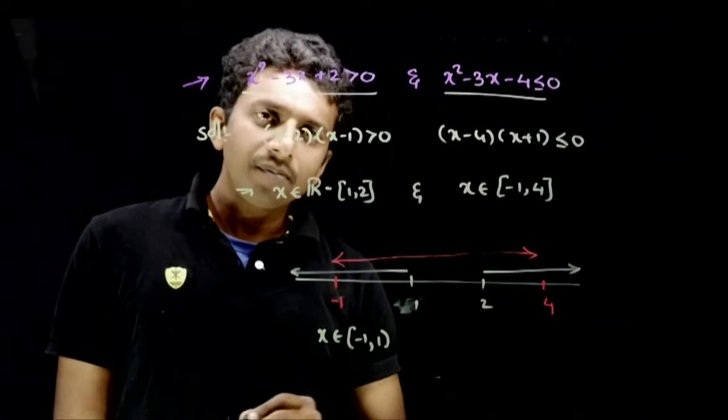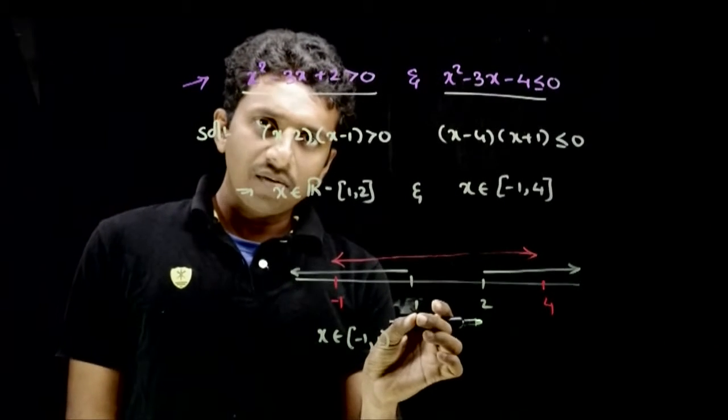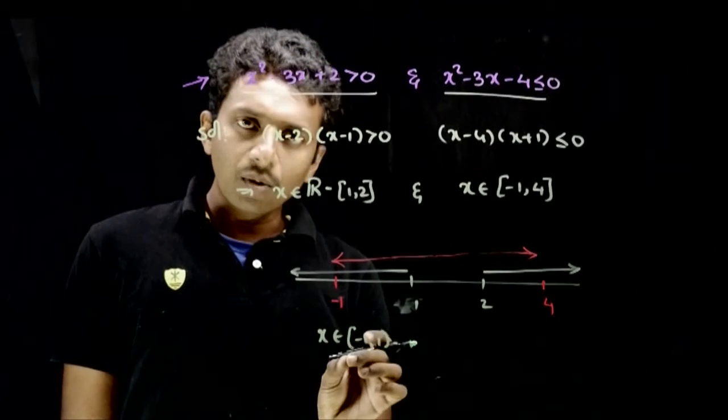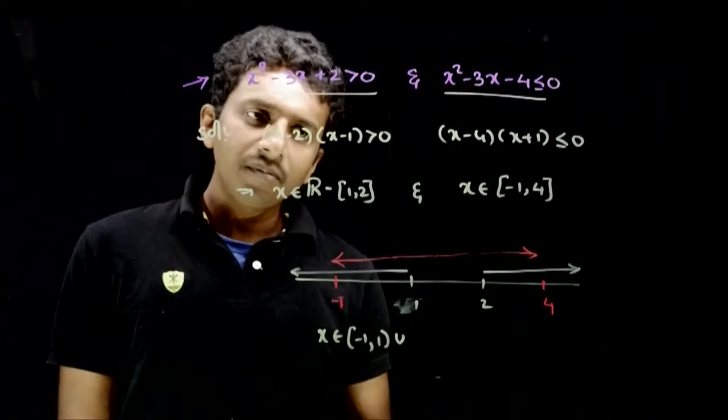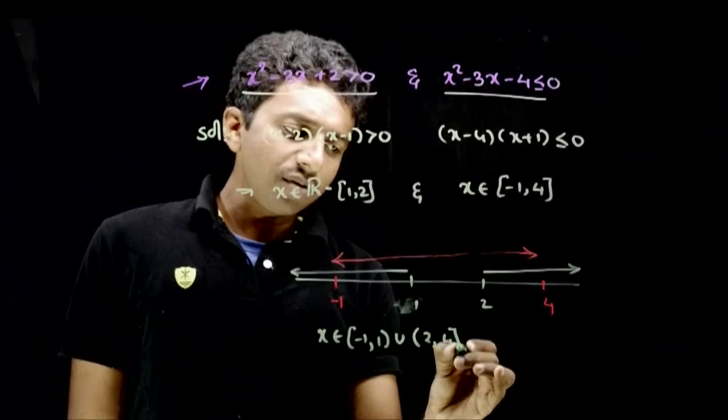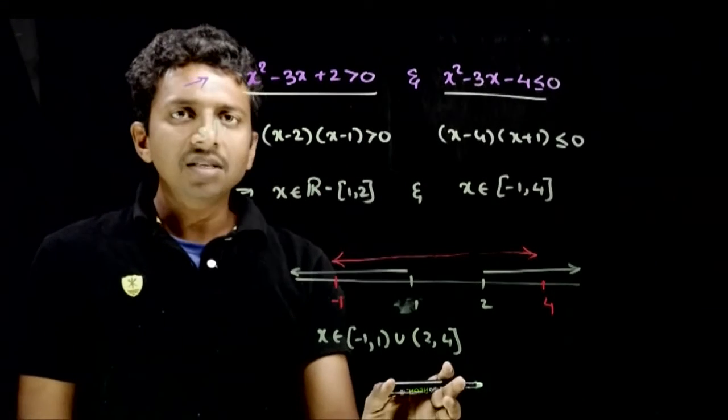Because in the first inequality, 1 is not the answer. So minus 1 to 1 is possible, closed minus 1 to open 1. And here, open 2 to closed 4, x can be between these. So this is the simultaneous solution to these two inequalities.